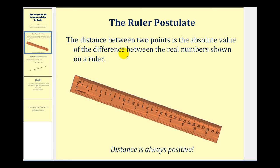The ruler postulate states the distance between two points is the absolute value of the difference between the real numbers shown on a ruler.